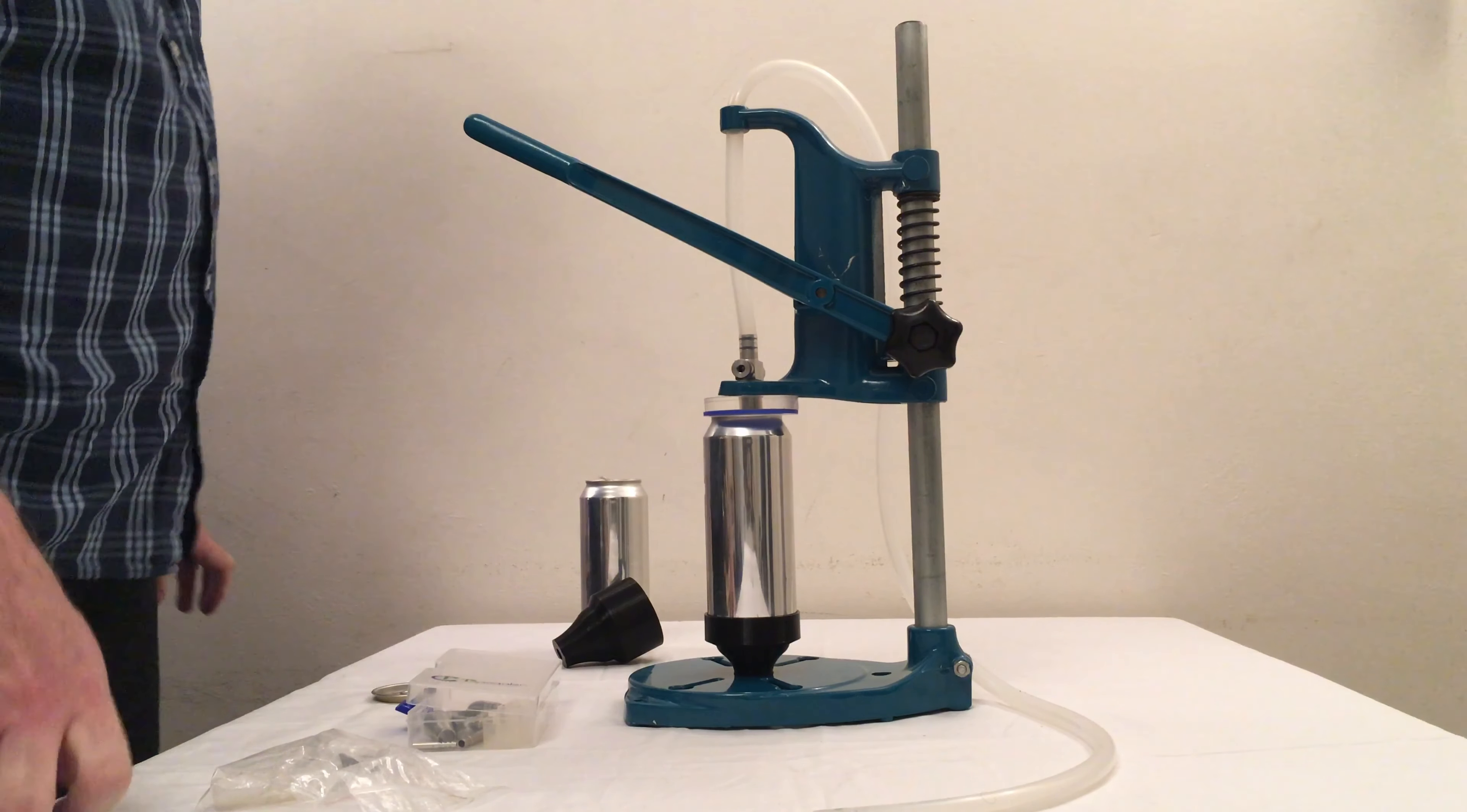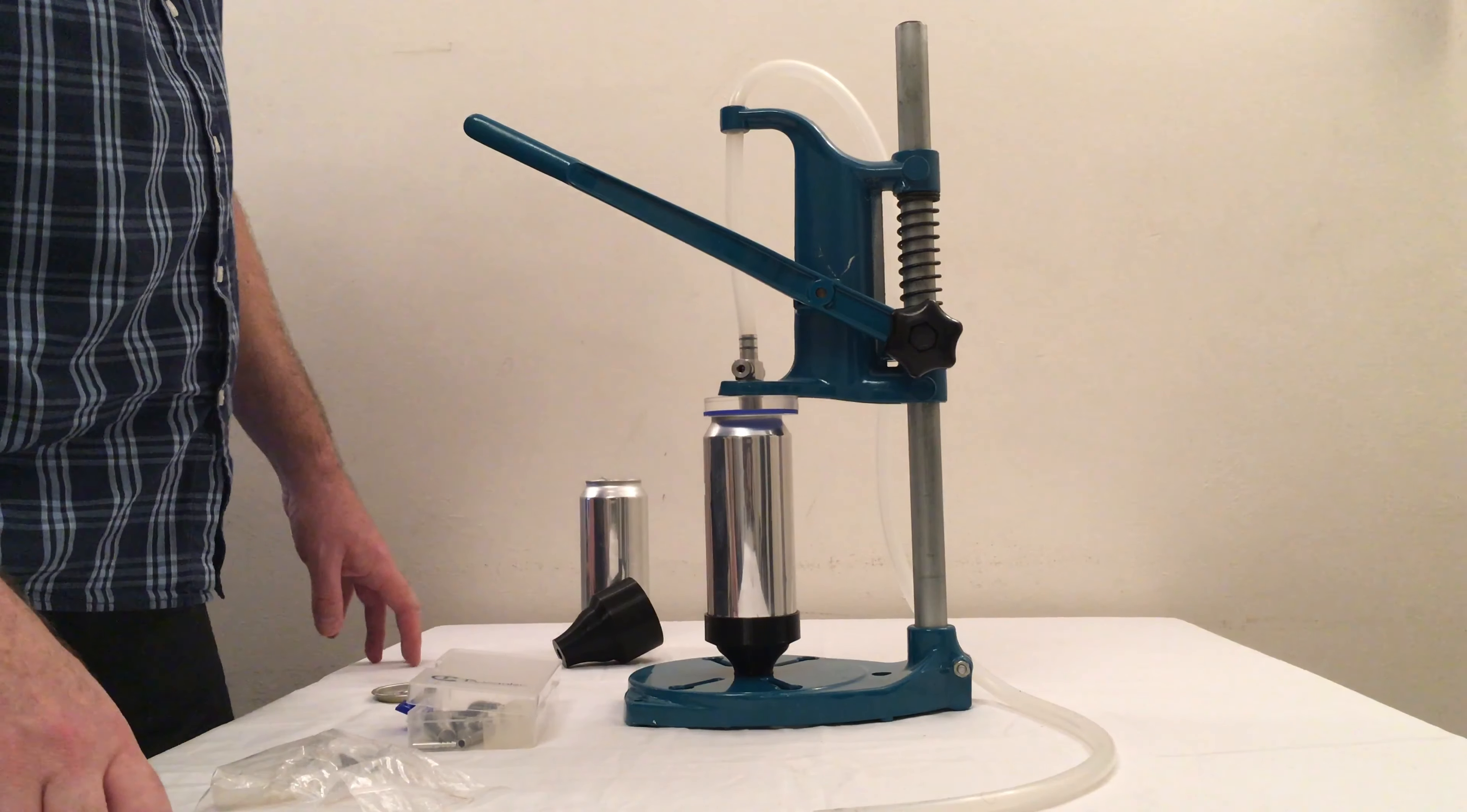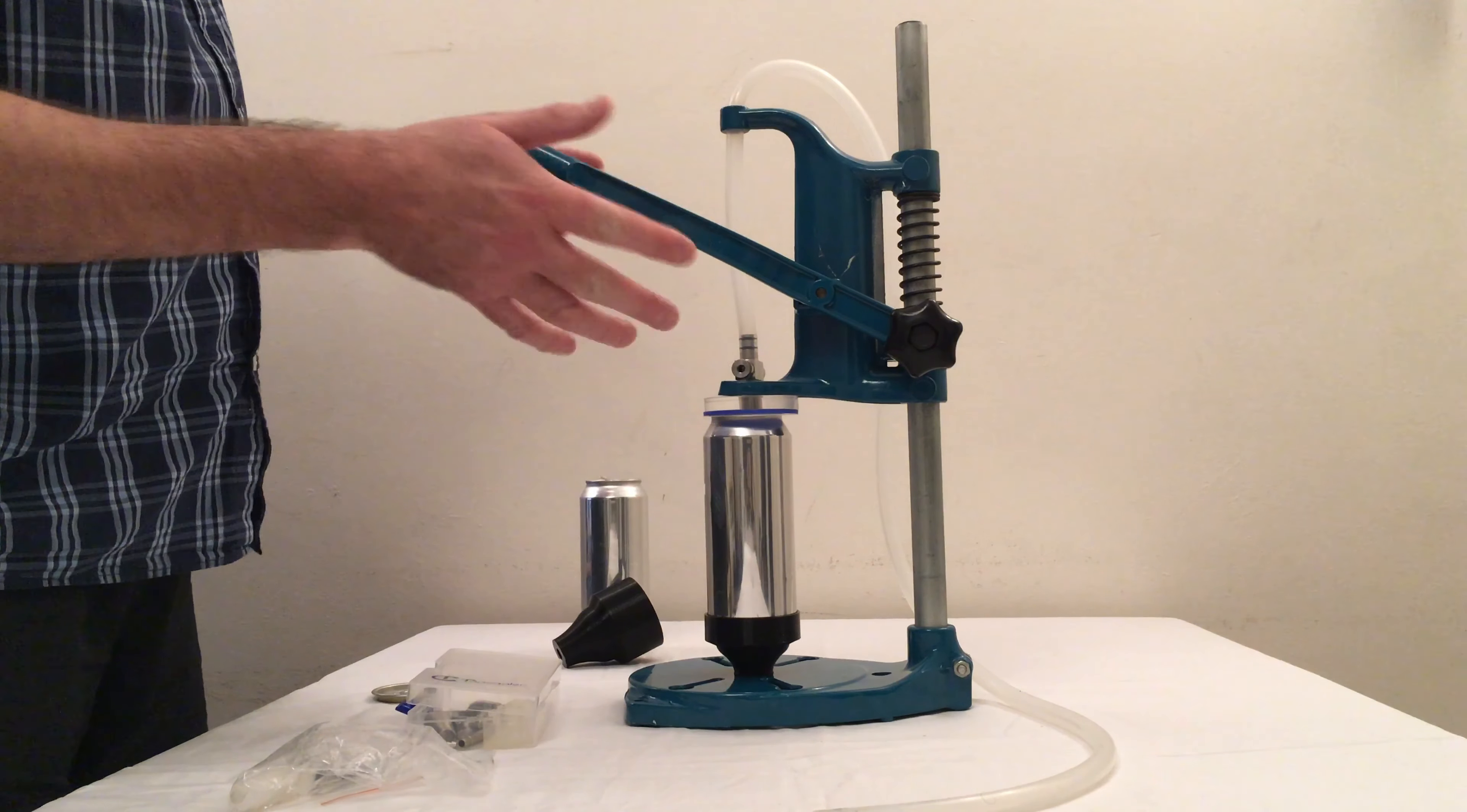Now, as you can see, the main body of the piece of equipment is an old drill press. This one's a Black & Decker drill press. It's made out of aluminium, so it's nice and light, but it's quite sturdy.